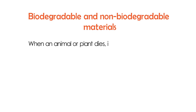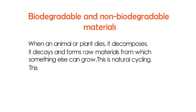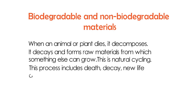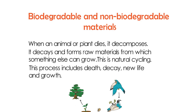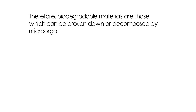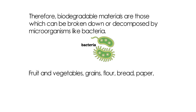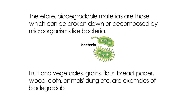Biodegradable materials: when an animal or plant dies, it decomposes, decays, and forms raw materials from which something else can grow. This is natural cycling — a process that includes death, decay, new life, and growth. Biodegradable materials are those which can be broken down or decomposed by microorganisms like bacteria. Vegetables, animals' dung, etc. are examples of biodegradable material.